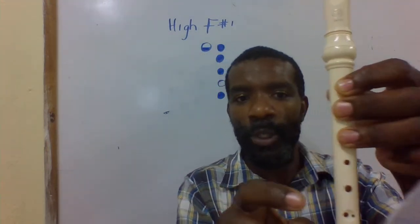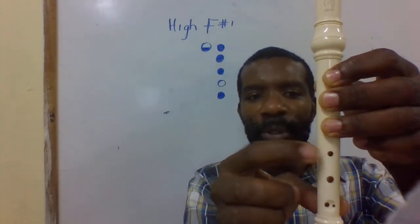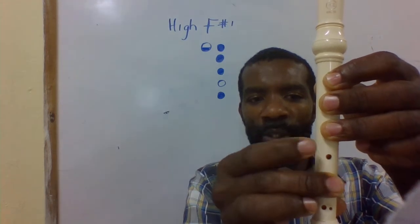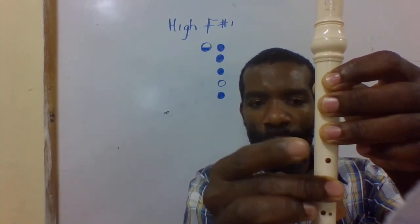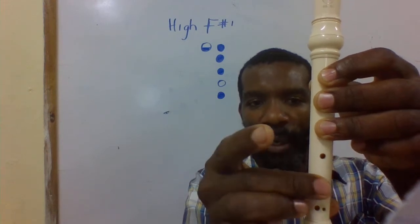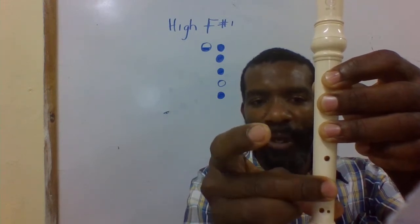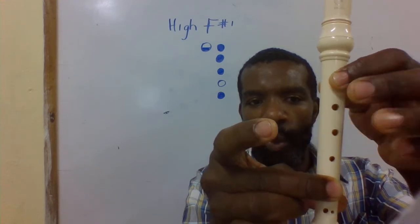If you notice, I skipped the hole, and I'm not using my pointer finger—I'm using my second finger, my middle finger. So it's one, two, three, skip one, cover the next hole, half covering the thumb.